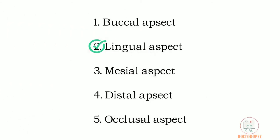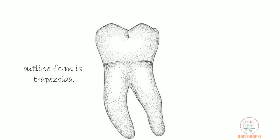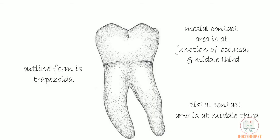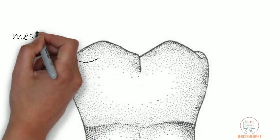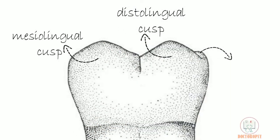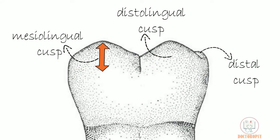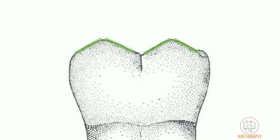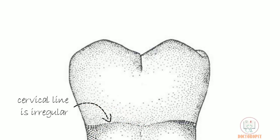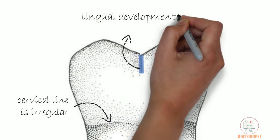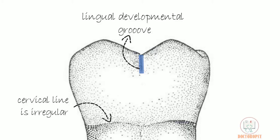Next, the lingual aspect. The outline form features of the buccal aspect are seen in the lingual aspect as well, but only 3 cusps are visible from this aspect: the 2 lingual cusps — mesiolingual cusp and distolingual cusp — and part of the distal cusp. The 2 lingual cusps are almost of equal mesiodistal width, but the cusp tip is highest on the mesiolingual cusp. The cuspal slopes of both cusps meet at an obtuse angle of around 100 degrees. The cervical line is irregular. A groove is seen between the two cusps called the lingual developmental groove, which is shorter than both the buccal grooves.